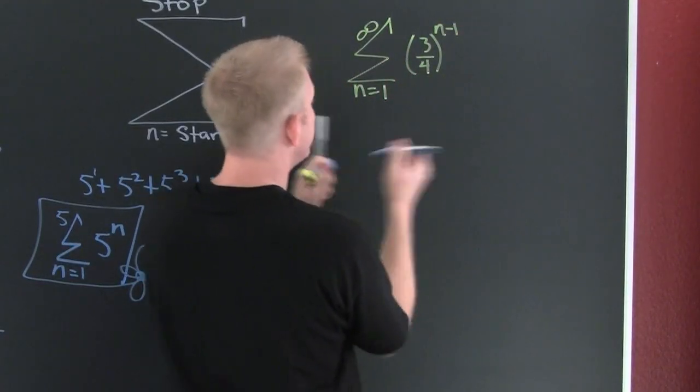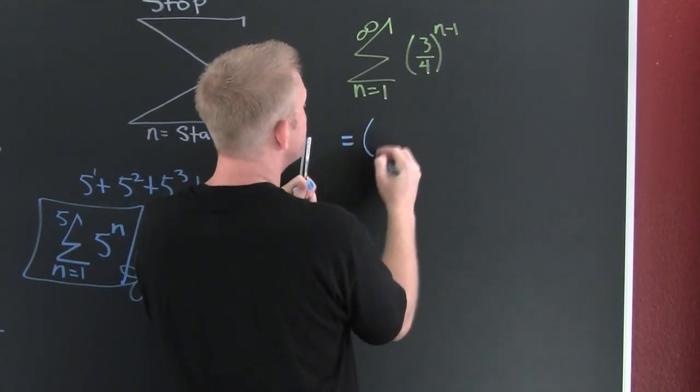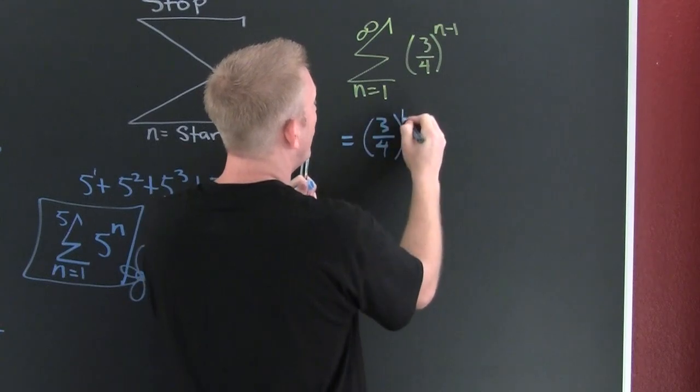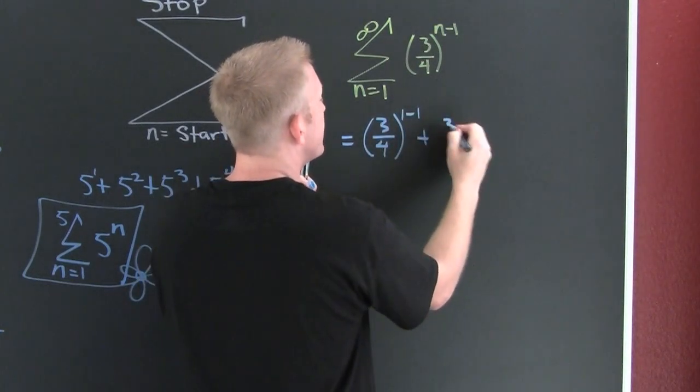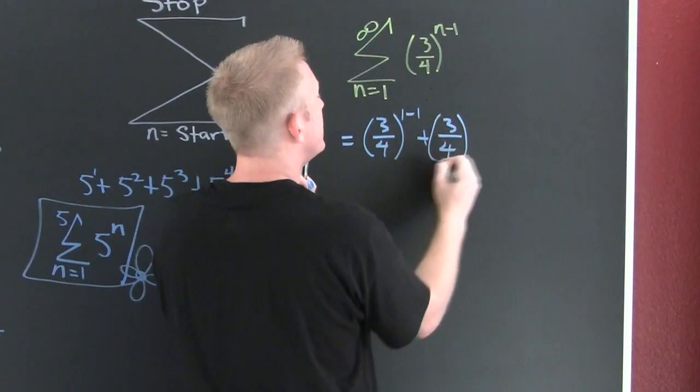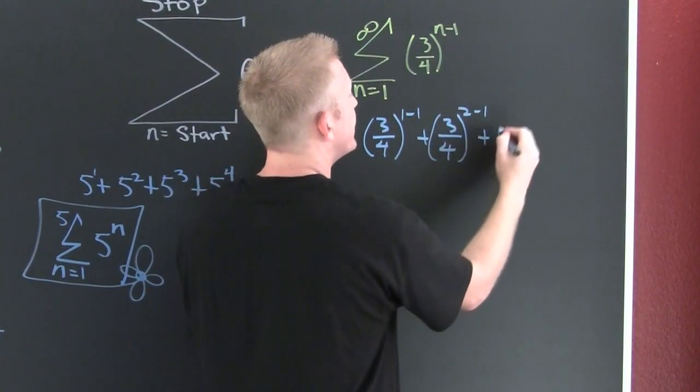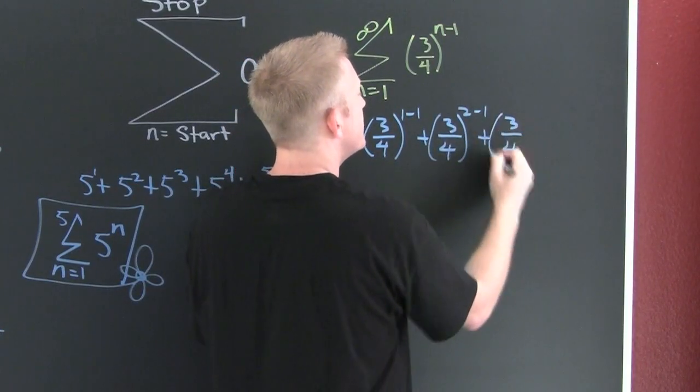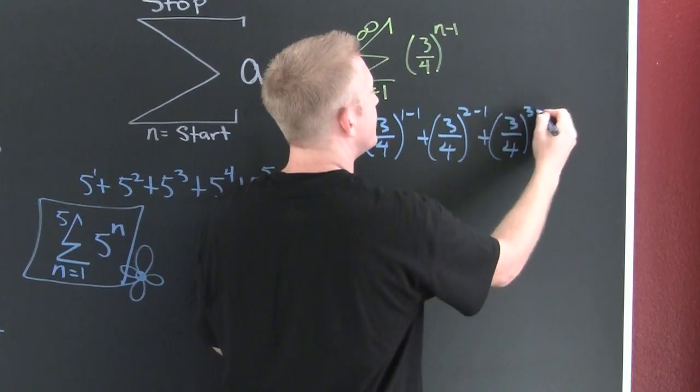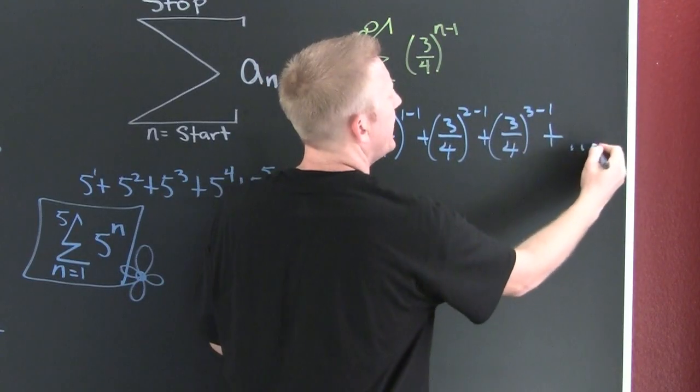If you were to take a look at some of these terms, crank them out. This is three fourths to the one minus one plus three fourths to the two minus one plus three fourths to the three minus one. Plus, okay, I've seen enough.